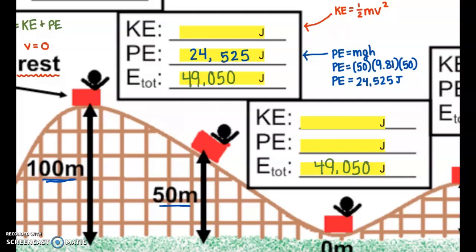But we still have to solve for kinetic energy. The equation one-half mv squared is still not very useful to us. We still don't know the velocity. But we do know that kinetic energy plus potential energy needs to equal our total energy. Our kinetic energy plus 24,525 potential energy needs to equal our total energy. Solving this equation, we can see that there are 24,525 joules of kinetic energy here too.